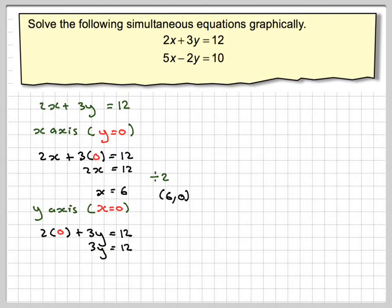The opposite of multiplying by 3 is to divide by 3, and therefore we get that y equals 4. So that gives the coordinate (0, 4), because x is 0, y is 4.